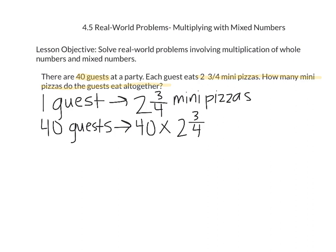If you remember from the last lesson, we need to change our mixed number into an improper fraction. So we're going to do our fraction cartwheel. 4 times 2 is equal to 8, and 8 plus 3 is equal to 11. So 11 becomes our numerator and 4 stays as our denominator.